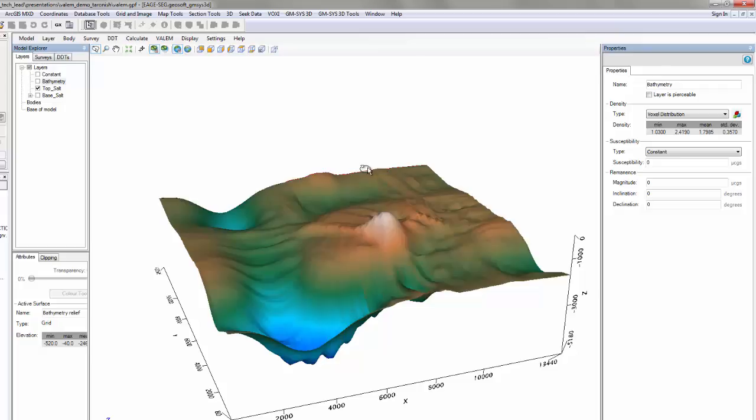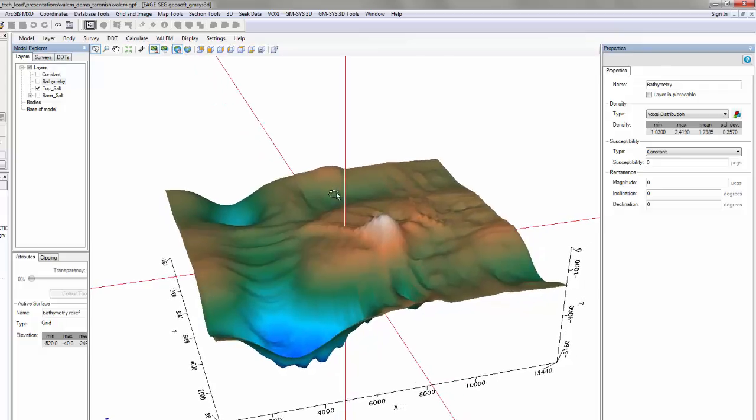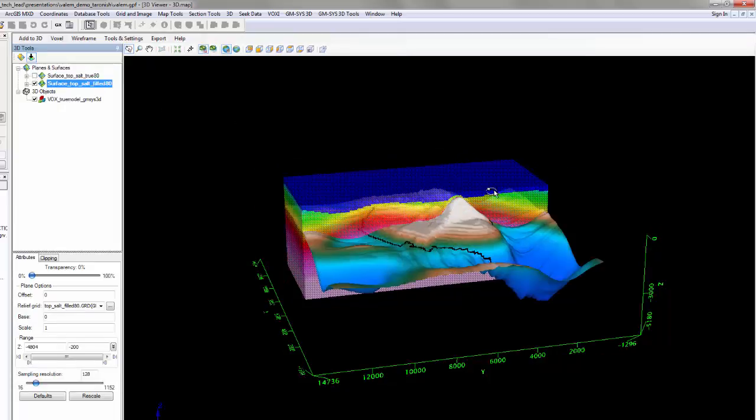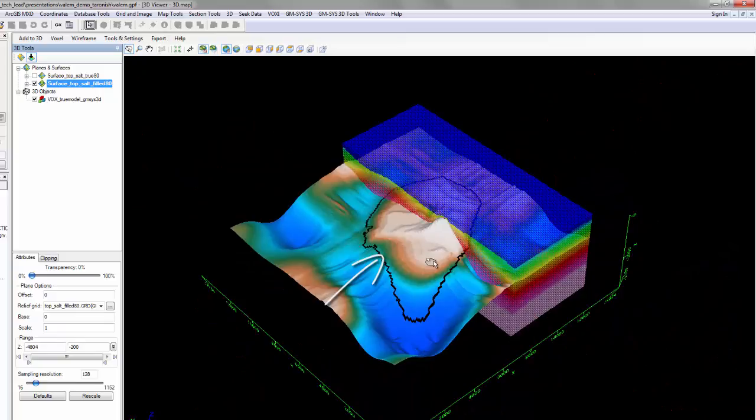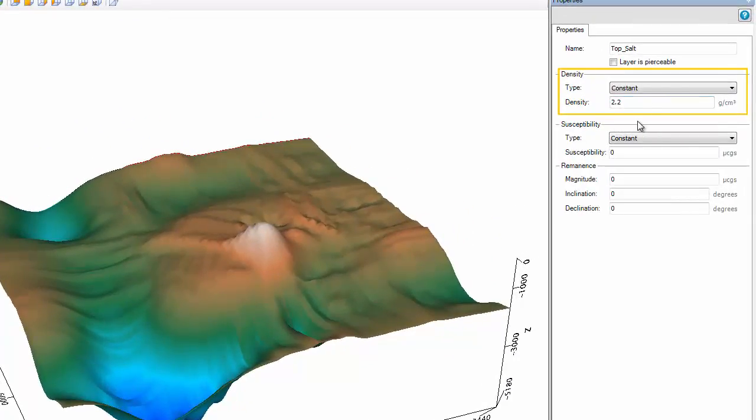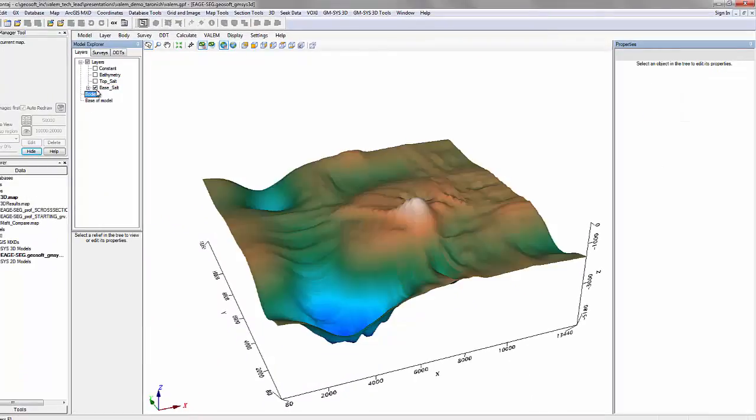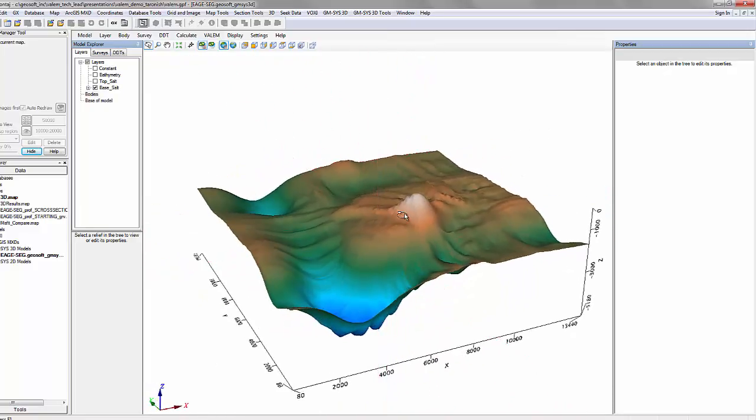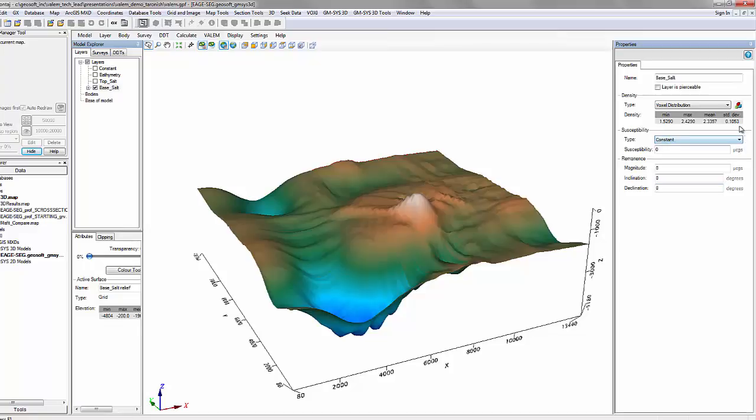I will now construct this model in the GM-Sys 3D workspace using relief surfaces to define boundaries and the density voxel to assign physical properties to each layer. The top of the model, or sea surface, has a constant elevation of 0 meters and a salt water density of 1.03 grams per cubic centimeter. The sea floor is defined by a bathymetry grid, and the density beneath this layer is defined by a density voxel. When adding layers to GM-Sys 3D, they must span the lateral extents of my model in order to forward calculate the gravity or magnetic response. Therefore, I have expanded the top of salt elevation grid. For the salt body, I have specified a constant density of 2.2 grams per cubic centimeter in my GM-Sys 3D model.